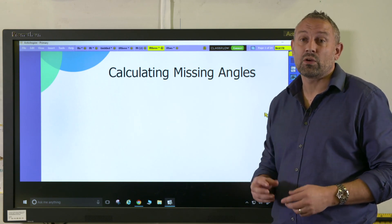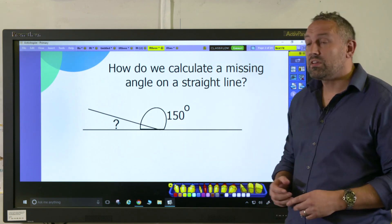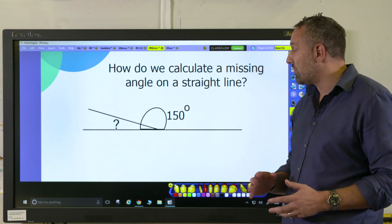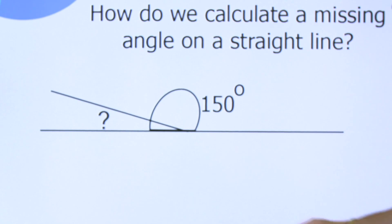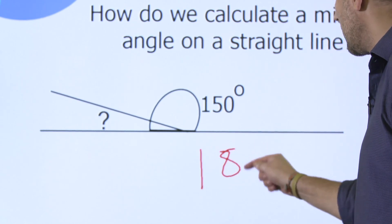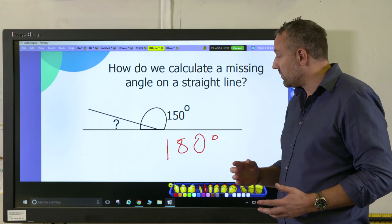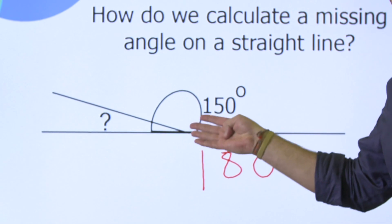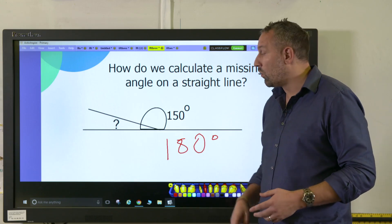Here, this is calculating angles on a straight line. The key fact here is children have to know that a straight line equals 180 degrees, and then they can work out what the missing part is because they can realize that 180 minus 150 degrees is 30 degrees.